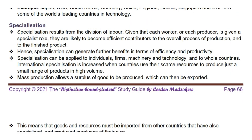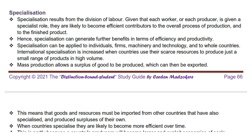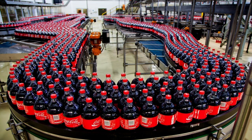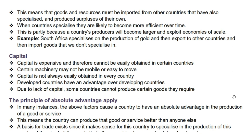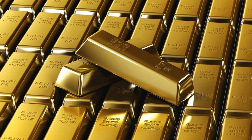Next we have specialization as a supply reason for international trade. Specialization results from the division of labor — each worker or producer given a specialist role becomes an efficient contributor to production. International specialization occurs when countries use their scarce resources to produce a small range of products in high volume. Mass production allows a surplus to be produced and exported, while goods must be imported from other countries that have also specialized. When countries specialize they become more efficient over time and exploit economies of scale. For example, South Africa specializes in the production of gold, exports it to other countries, and imports goods it does not specialize in.